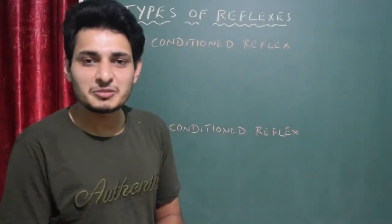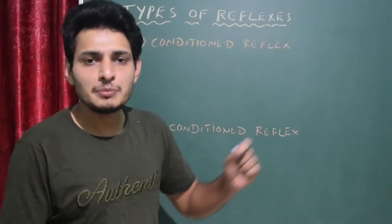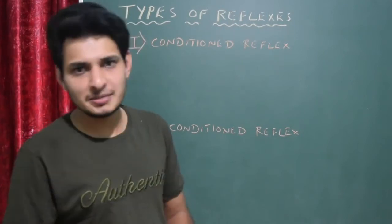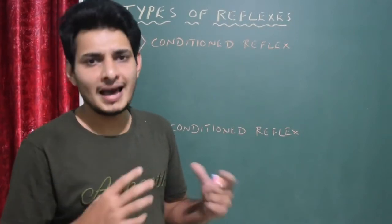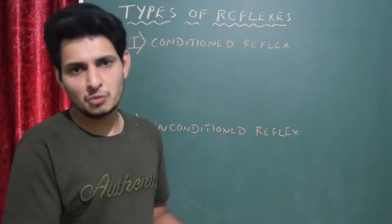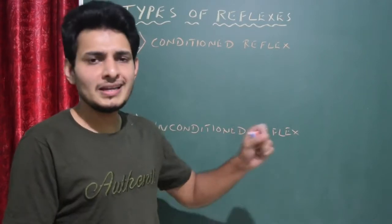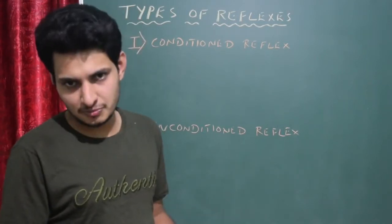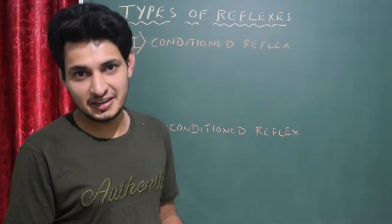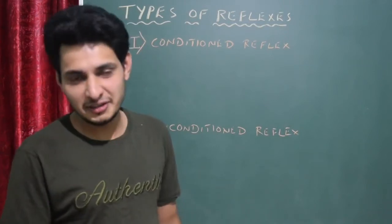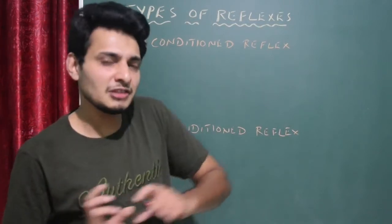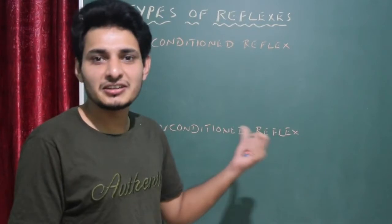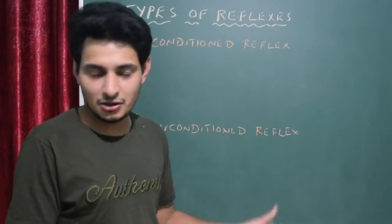Hello everyone. I'm going to explain the types of reflexes. There are two types of reflexes exhibited in all animals — I'm talking about human beings. One is called conditioned reflexes, which requires experience and training. After learning, everything becomes involuntary. The other one is unconditioned reflex.